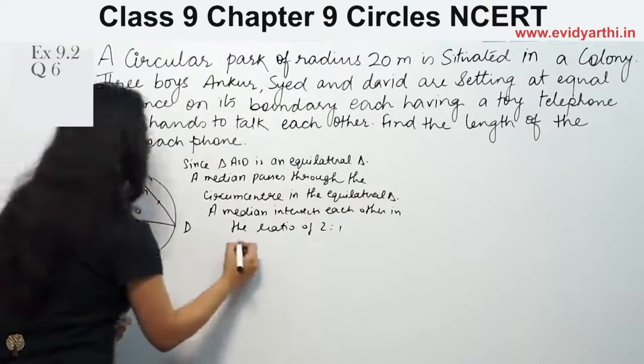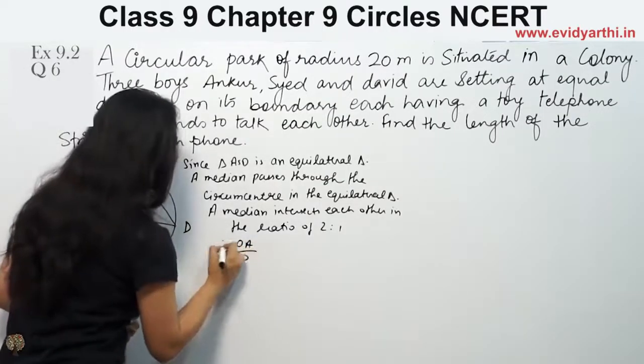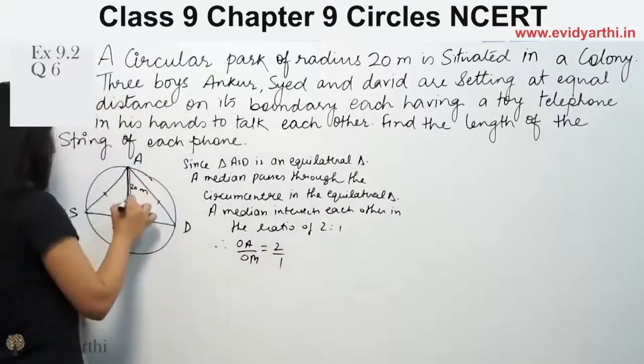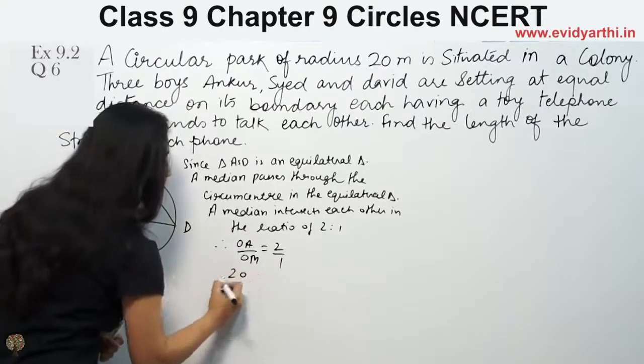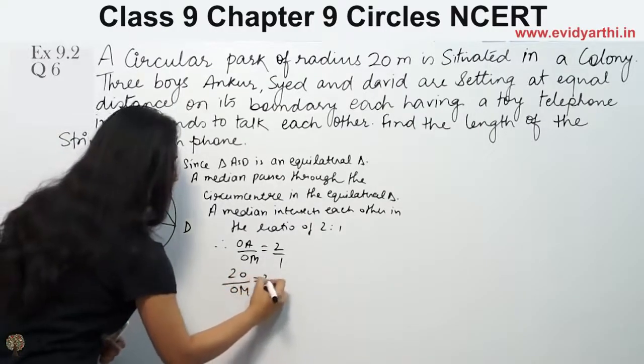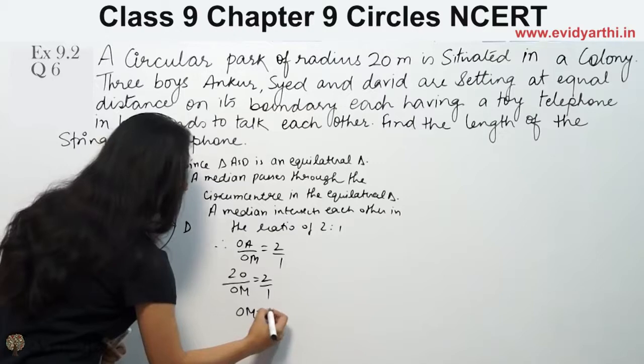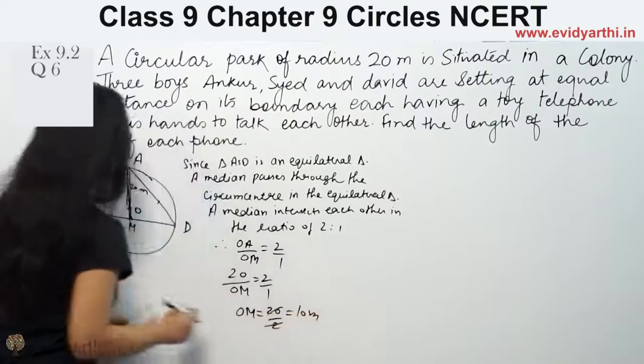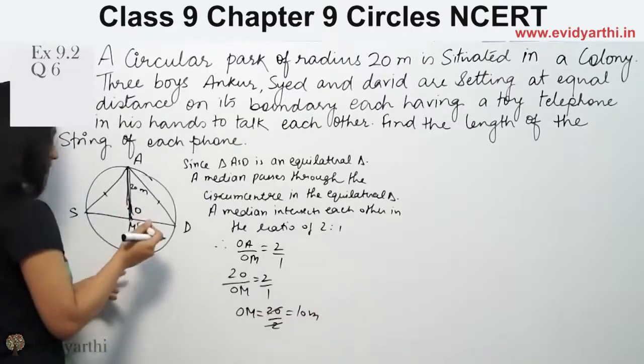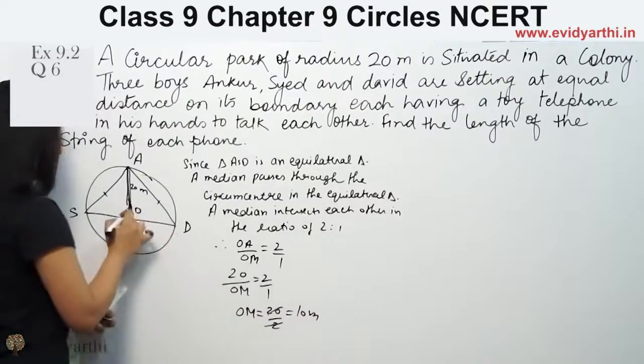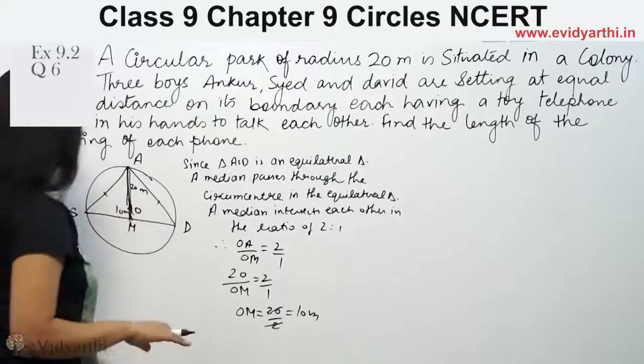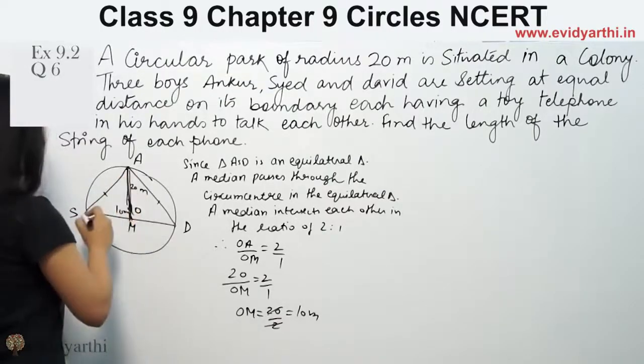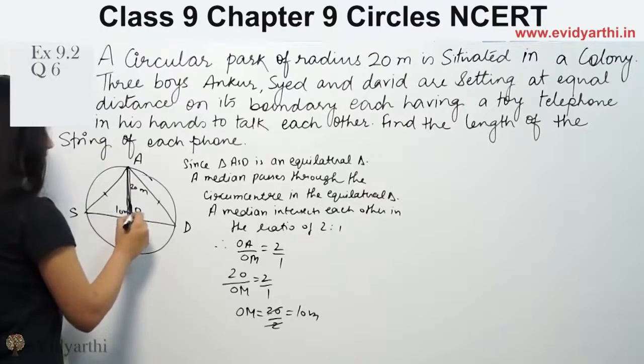OA by OM will be 2 by 1. OA's length is given as 20. So 20 upon OM equals 2 by 1. So OM equals 20 by 2, that means 10 meters. This length we have is OM, which is 10 meters. So from here we have OM's length is 10. Now in this triangle, this is 90 degrees.